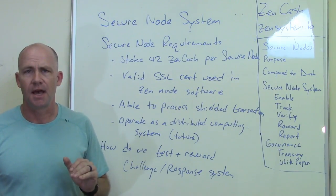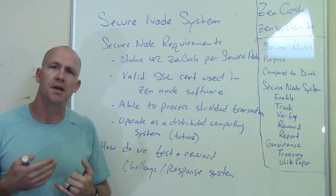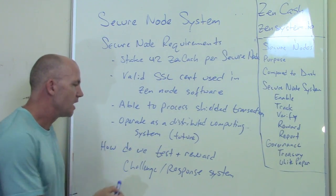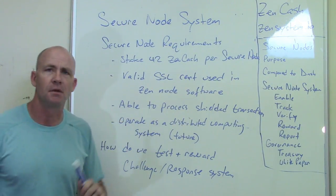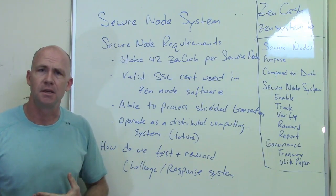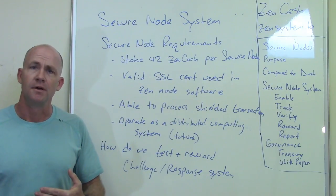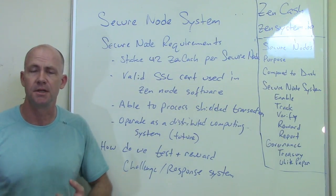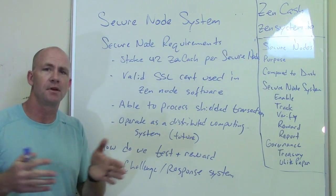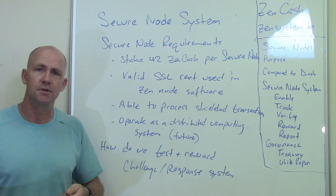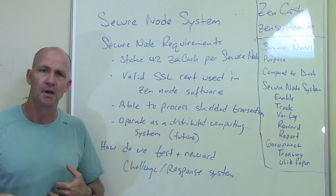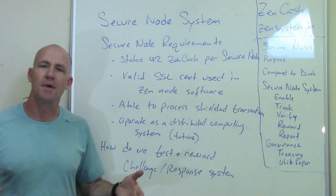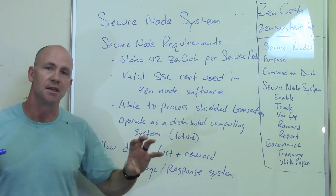Going back to the purpose of ZenCash — to be able to do all these anonymous transactions, communications, and publishing — we figured we would do the testing and rewarding of secure nodes by doing a challenge-and-response system. Not only do you have to have the ability to process a shielded transaction, but if you want to participate in the secure node payment reward, you have to actually prove that you're able to do a shielded transaction. Having all the secure nodes regularly do shielded transactions means there's a bunch of them happening on a regular basis, so people monitoring metadata will see a whole bunch of these transactions going on all the time.